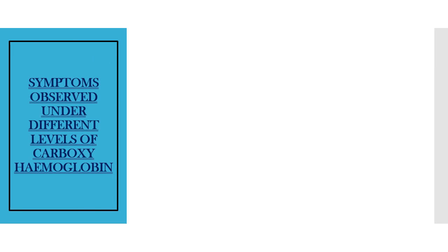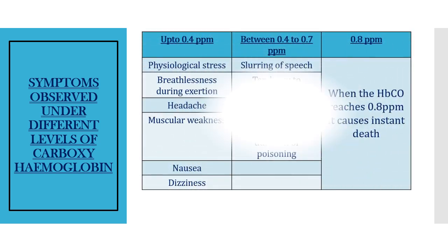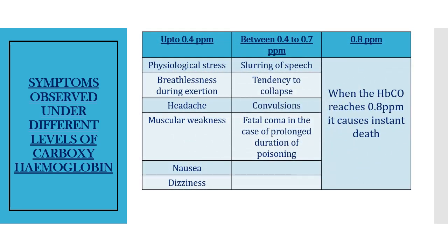What are the symptoms observed under different levels of carboxyhemoglobin, as tabulated here? Up to 0.4 ppm (parts per million), symptoms include physiological stress, breathlessness during exertion, headache, muscular weakness, nausea, vomiting sensation, and dizziness.